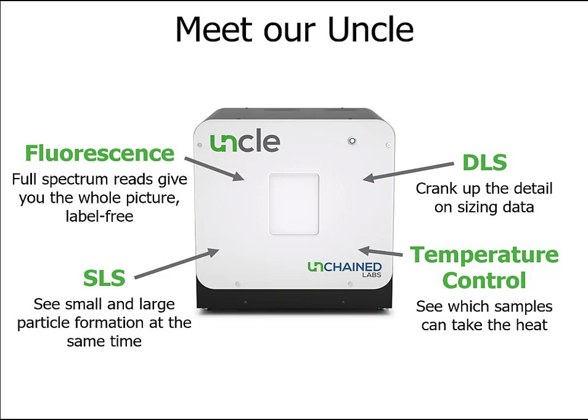UNCLE can see the full spectrum for fluorescence, giving you the option to look at protein intrinsic fluorescence and evaluate tyrosine and tryptophan fluorescence, or use any of an arsenal of fluorescent dyes. Simultaneous with that fluorescence experiment, you can use static light scattering to monitor how the same sample aggregates. UNCLE uses SLS at two wavelengths so you can track small and large particles at the same time. Dynamic light scattering is UNCLE's third detection method—a highly sensitive technique to give you details about your protein's size and size distribution. DLS is also powerful for understanding what's in your sample, and can be used to quality check proteins before or after an experiment, or to get orthogonal confirmation of SLS aggregation data.